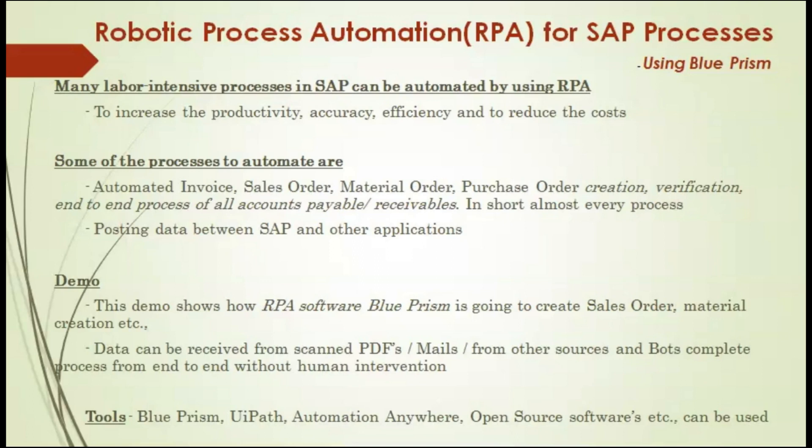In this demo, it shows how RPA software Blue Prism is going to create material creation and sales order, etc. Data can be received from scanned PDFs, emails, or from other sources, and the BOT completes the process from end-to-end without any human intervention.